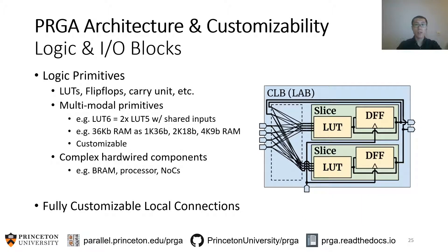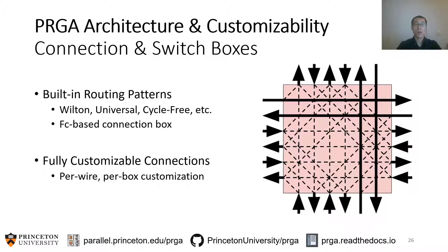Let's dive into a logic block. PRGA supports a variety of logic primitives, including basic LUTs, flip-flops, adders, etc., as well as multimodal primitives or even large complex hardwired components. You are also welcome to bring your own hardware design into PRGA or implement your own multimodal primitives. The local connections in the CLB are fully customizable on a per-pin, per-wire basis. The connection and switch boxes are also highly customizable, and PRGA provides a rich set of built-in routing patterns for common use cases. Moreover, each routing box can be individually customized on a per-wire, per-box basis, giving you full control over the architecture.